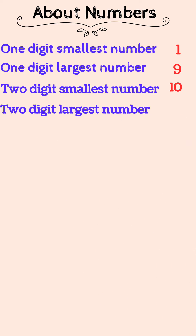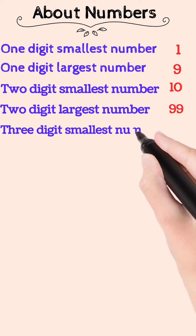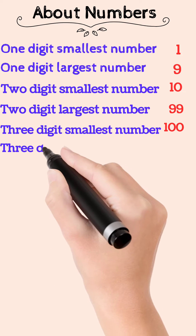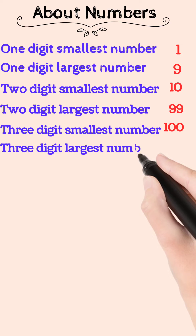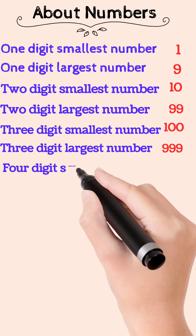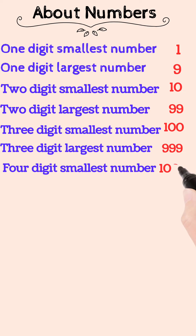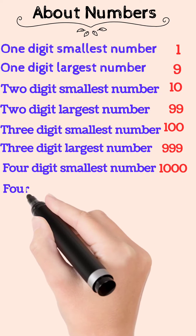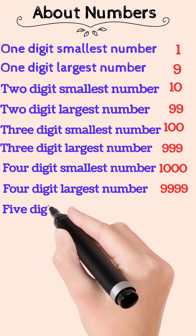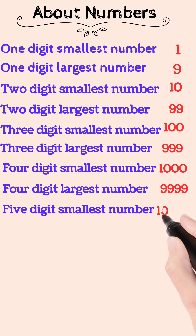Three digit smallest number is 100, three digit largest number is 999. Four digit smallest number is 1000, four digit largest number is 9999.